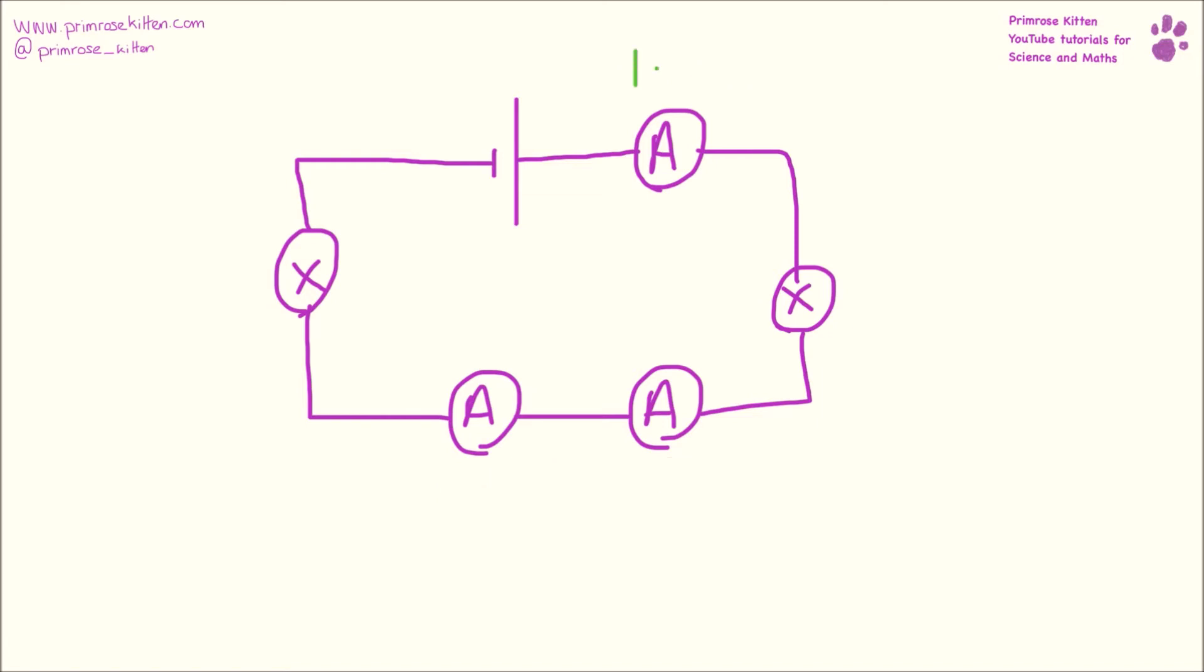So if the reading for this one was 1.7 amps, because all of them in a series circuit are the same I can say this one was 1.7 amps and this one was 1.7 amps as well.